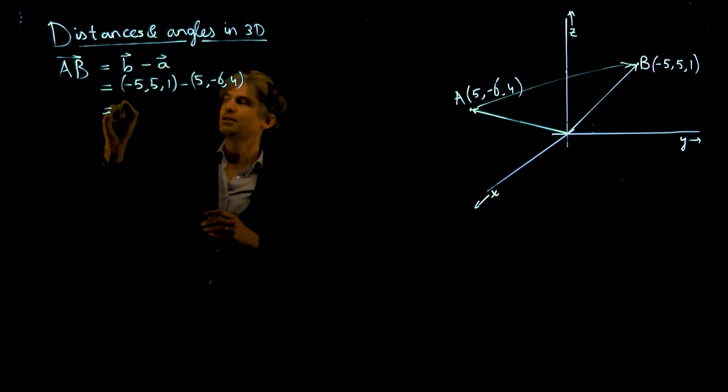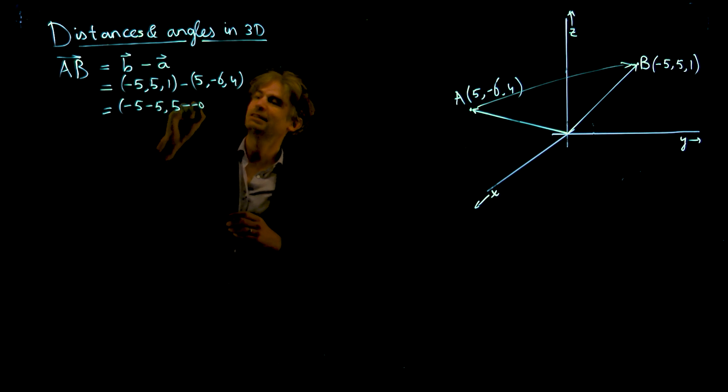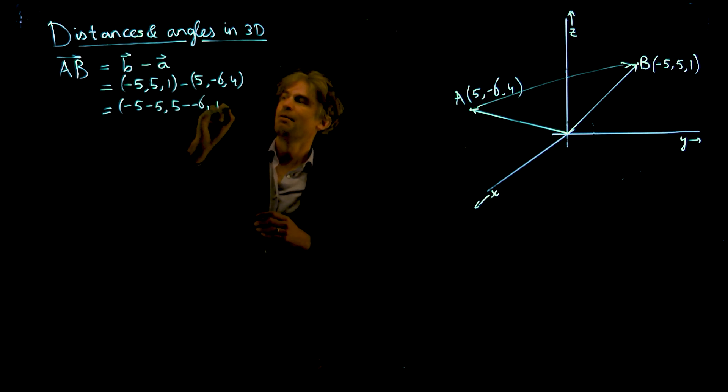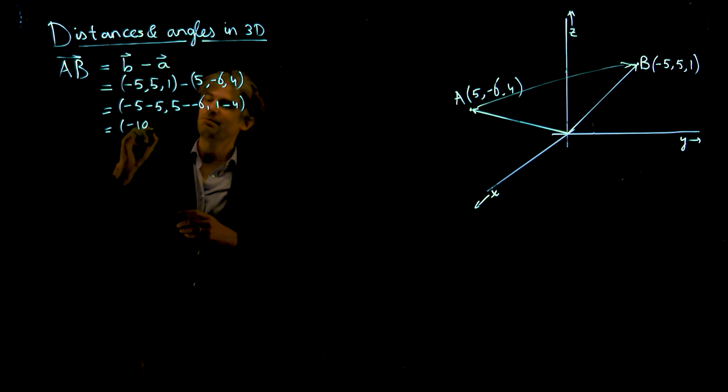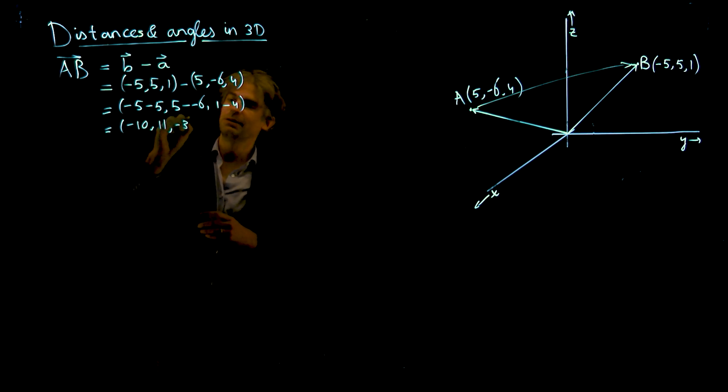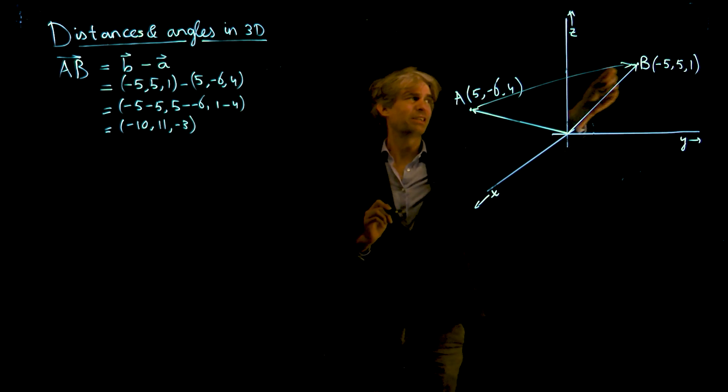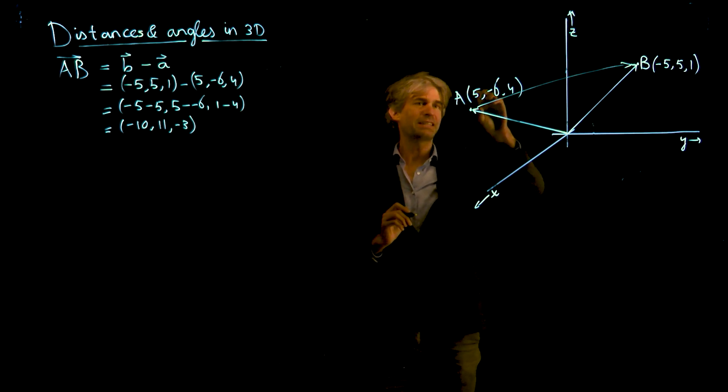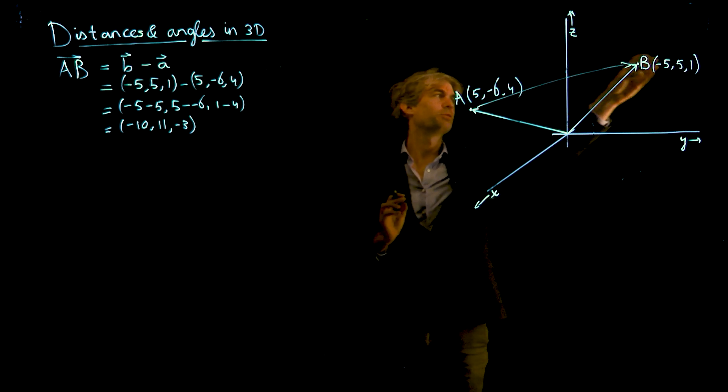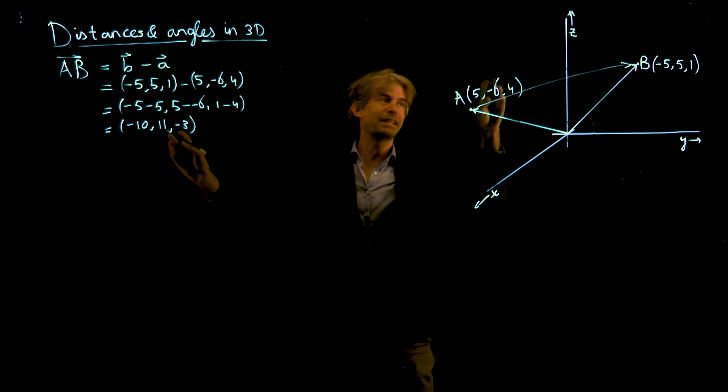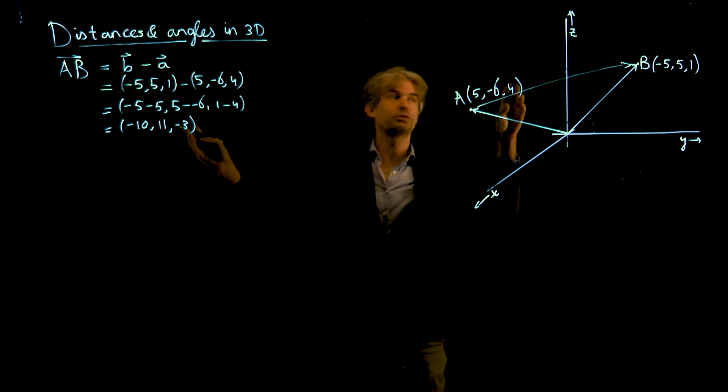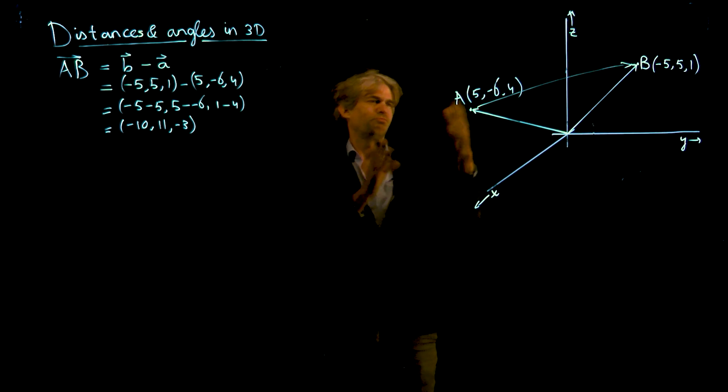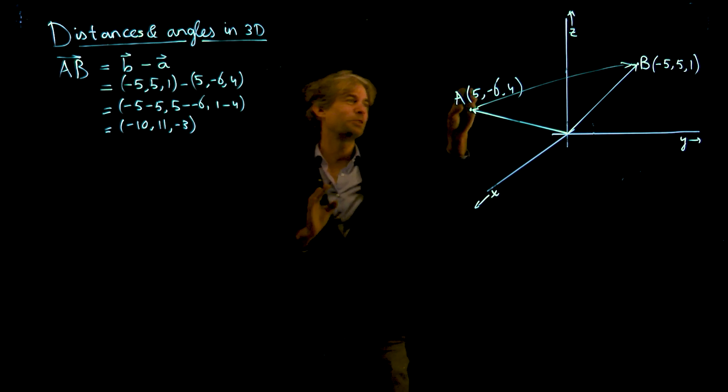So I get minus 5 minus 5, I get 5 minus minus 6, and I get 1 minus 4. So far so good. Minus 10, 11, and minus 3. What this vector does is it goes in the x direction minus 10, from 5 to minus 5. In the y direction it goes from minus 6 to plus 5, so plus 11. In the z direction it goes from 4 to 1, so minus 3. That's another way to do this computation, just look at what happens.